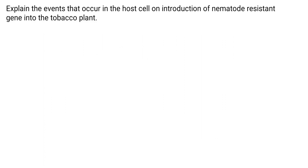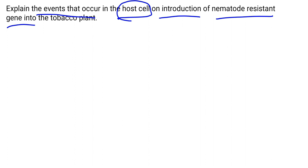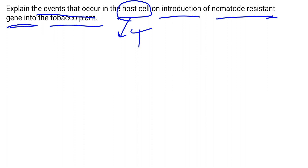The question is: explain the events that occur in the host cell on introduction of a nematode resistant gene into the tobacco plant. The host cell here is tobacco, and we have to introduce nematode resistant genes into this tobacco plant to prevent infection. Before attempting this question, I want to give you some background.